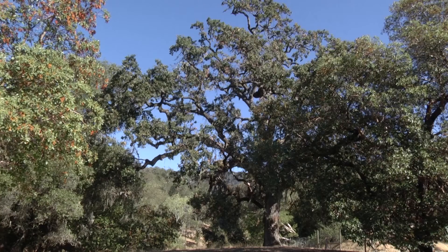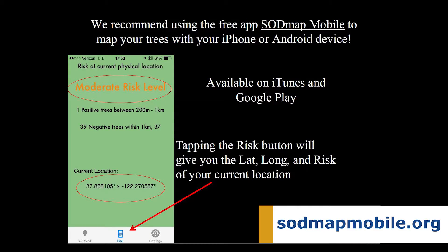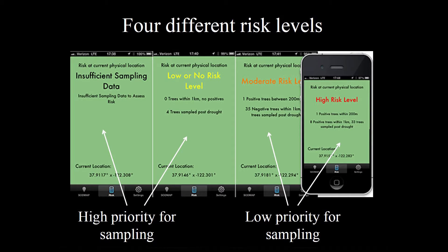We have a three-step process, very simple. The first one is to determine how serious the risk is right where you live or where your trees are. In order to do that, we recommend you use the app SodMap Mobile, because the app will actually calculate the risk better than I can. By tapping a button, you will know how bad the risk is.